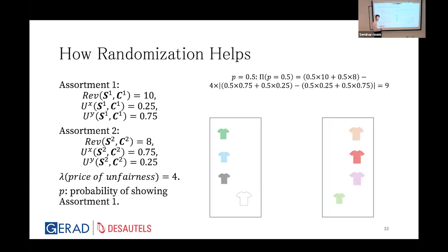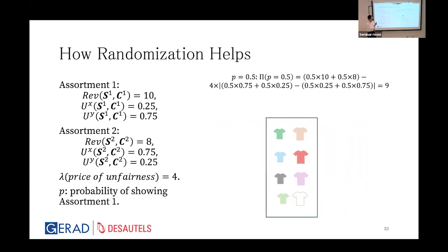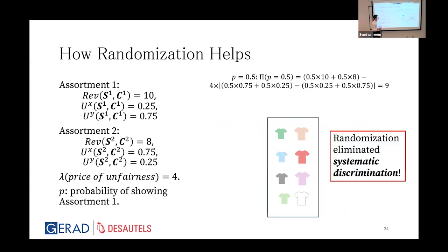Setting P equal to 0.5 is where the magic happens. By randomizing equally between the two assortments, we eliminate systematic discrimination. Based on chance, the assortment may be fair or unfair toward a given customer — but in expectation, the probability of systematic unfairness is zero. That is how randomization helps.